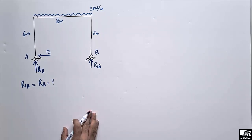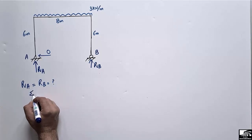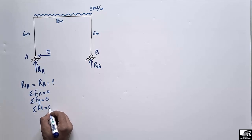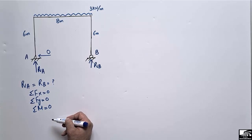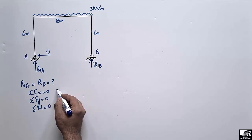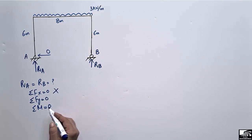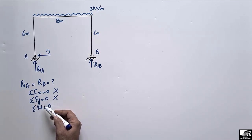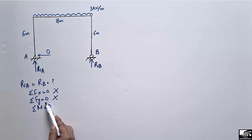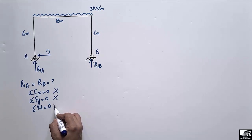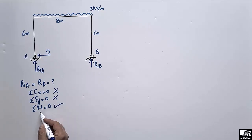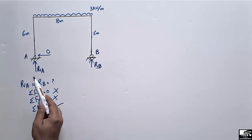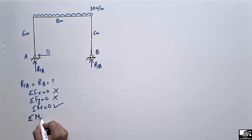To find the support reactions, we use the three equilibrium equations: summation of horizontal forces = 0, summation of vertical forces = 0, and summation of moments at any point = 0. Since there is no horizontal force, we neglect the first equation. We have two unknowns RA and RB, so we cannot use the vertical equation alone. We will first use the moment equation about point A to find RB.